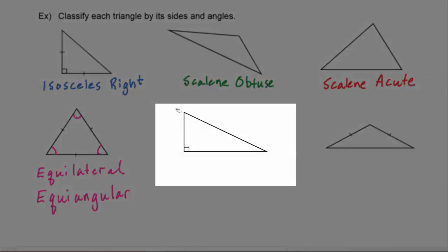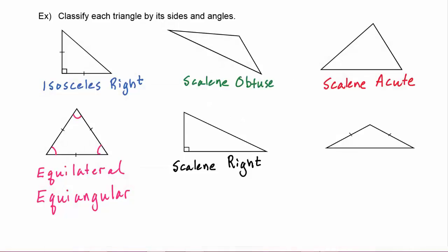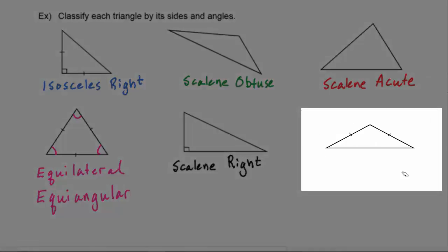The next triangle: none of the sides is equal, so it is scalene. It has a right angle in it, so we call this a scalene right triangle. And finally, we see two sides are equal, so we know it is isosceles, and it has an obtuse angle in it, so this is an isosceles obtuse triangle.